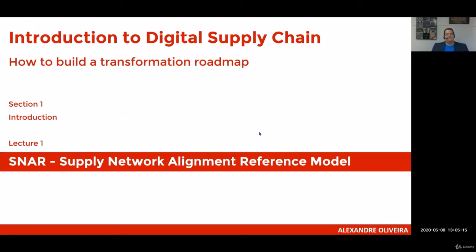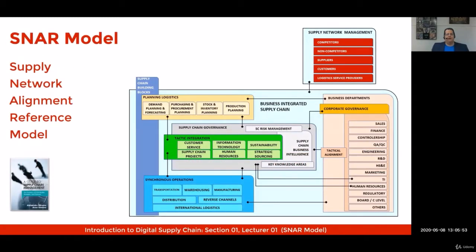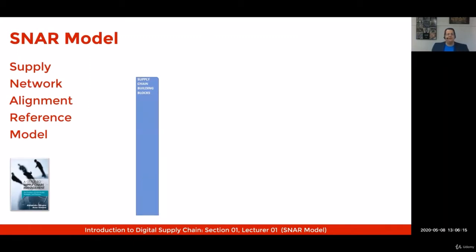We will explore the model with a very practical set of applications in a warehousing operation. The supply network alignment reference model was developed in 2014 to help us all see the key supply chain strategic knowledge areas. It starts with the building blocks.